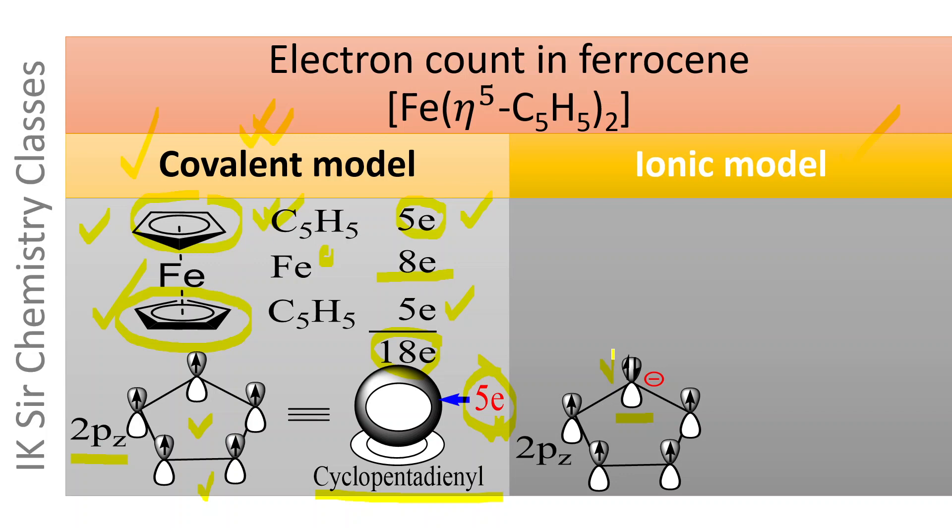These five 2pz atomic orbitals, which are parallel to each other and perpendicular to the plane of ring, take part in linear combination forming delocalized pi electron cloud having six electrons. There are six electrons: one, two, three, four, plus two, six. In the case of cyclopentadienyl ion, the delocalized pi electron cloud contains six electrons.